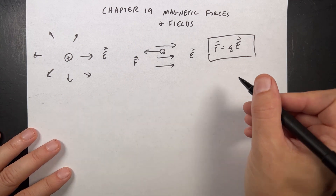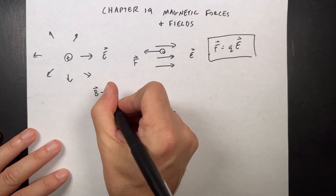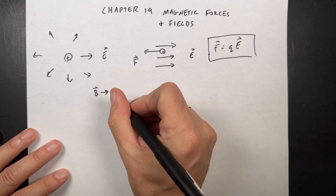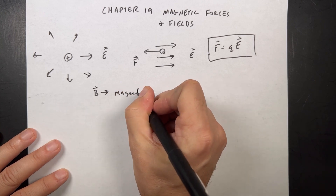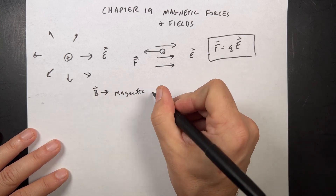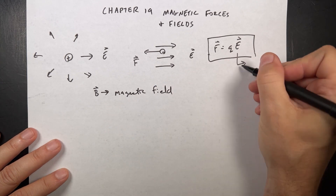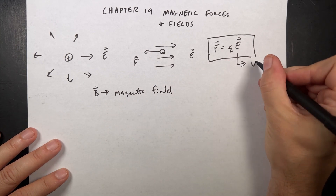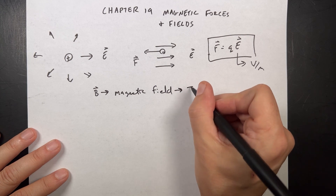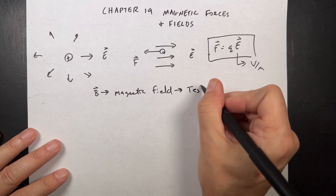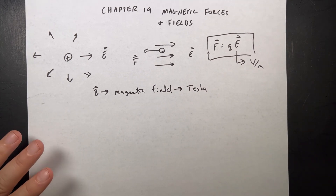So the first thing we need to know is this idea of B. B is what we use to represent the magnetic field. The electric field E has units of volts per meter. The magnetic field has units of Tesla, T.